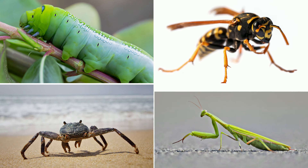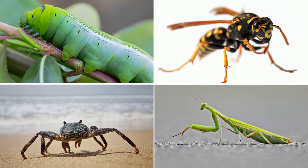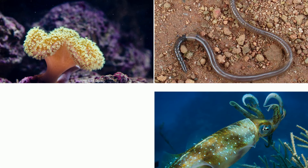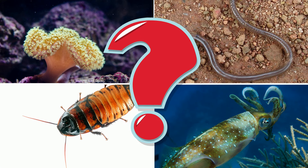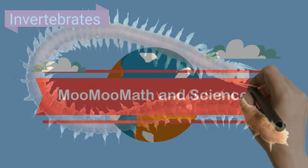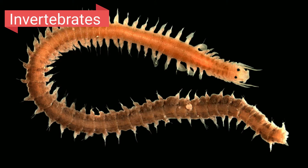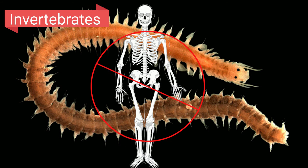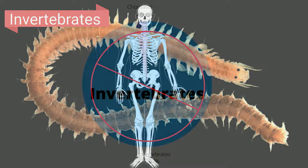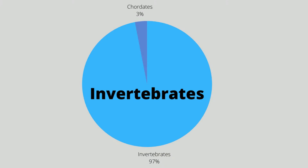What do these animals have in common? They are all invertebrates. An invertebrate is any animal that does not have an internal skeleton. Invertebrates make up around 97% of all animal species found on earth.